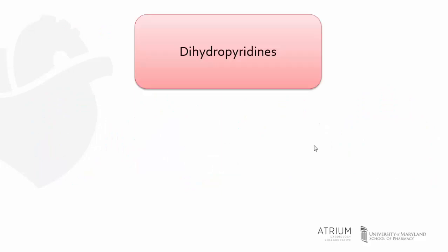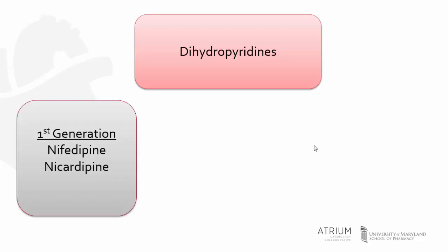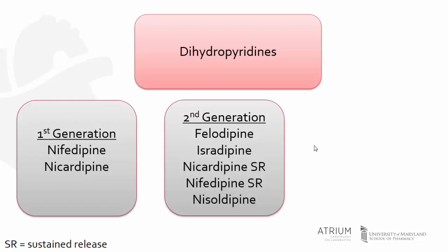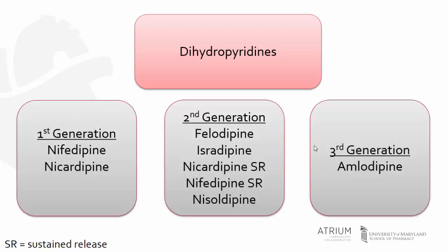Moving on to the dihydropyridine calcium channel blockers, we have first, second, and third generations. The drugs predominantly work on the vasculature, causing more vasodilation and blood pressure lowering than perhaps with the non-dihydropyridine calcium channel blockers. The key difference in each generation is the pharmacokinetic properties of the drug.